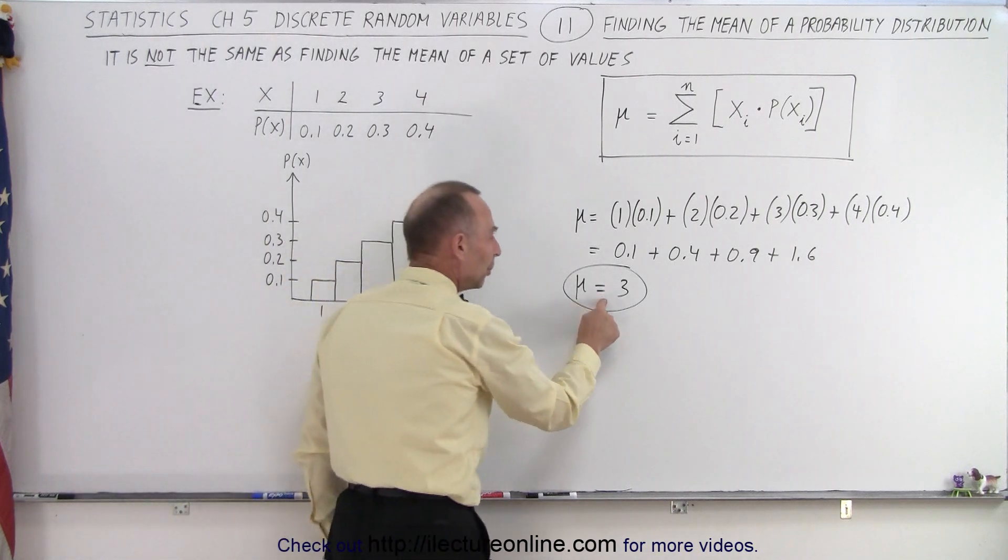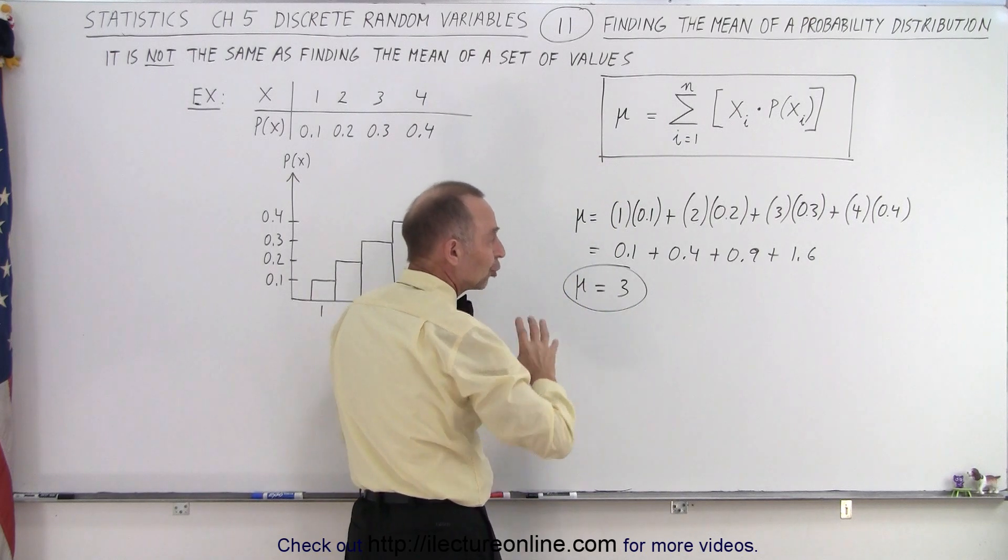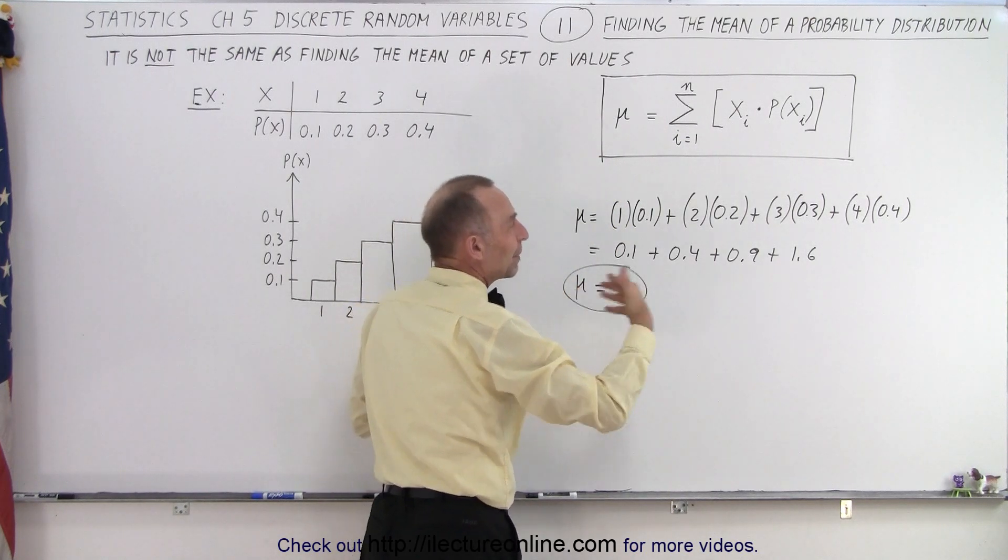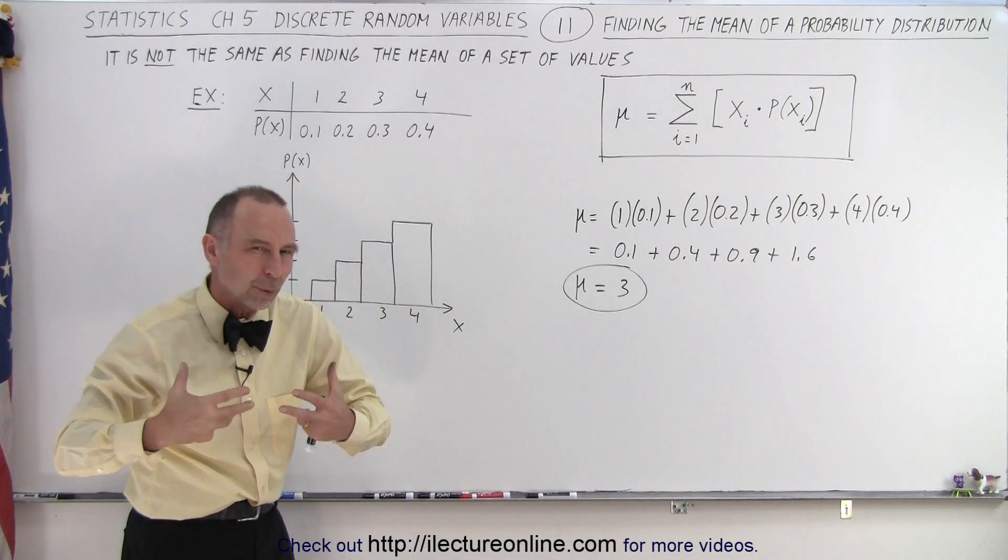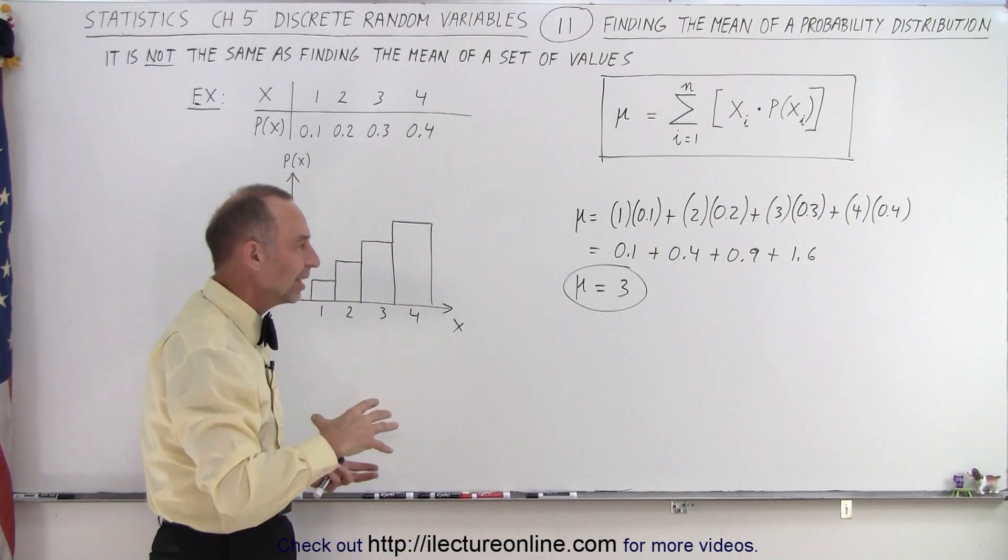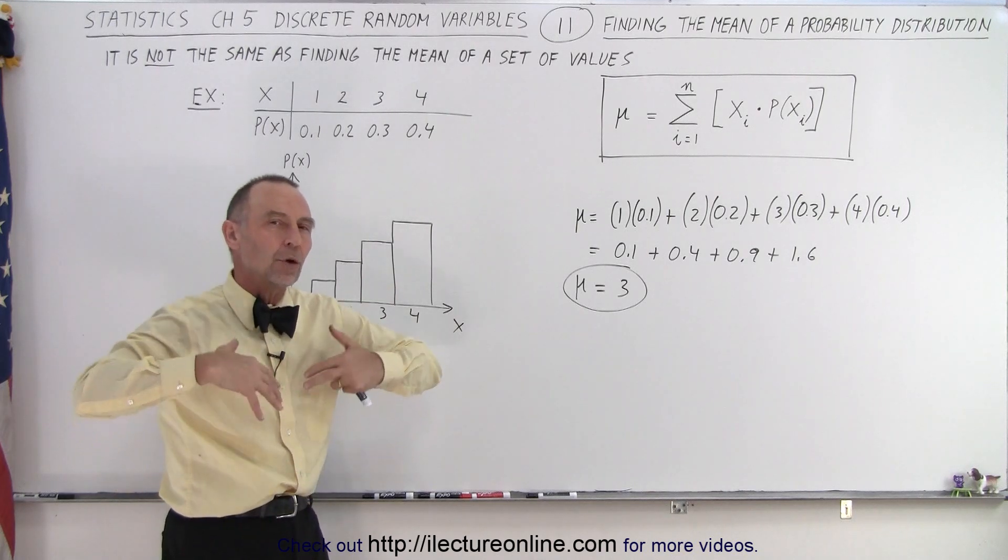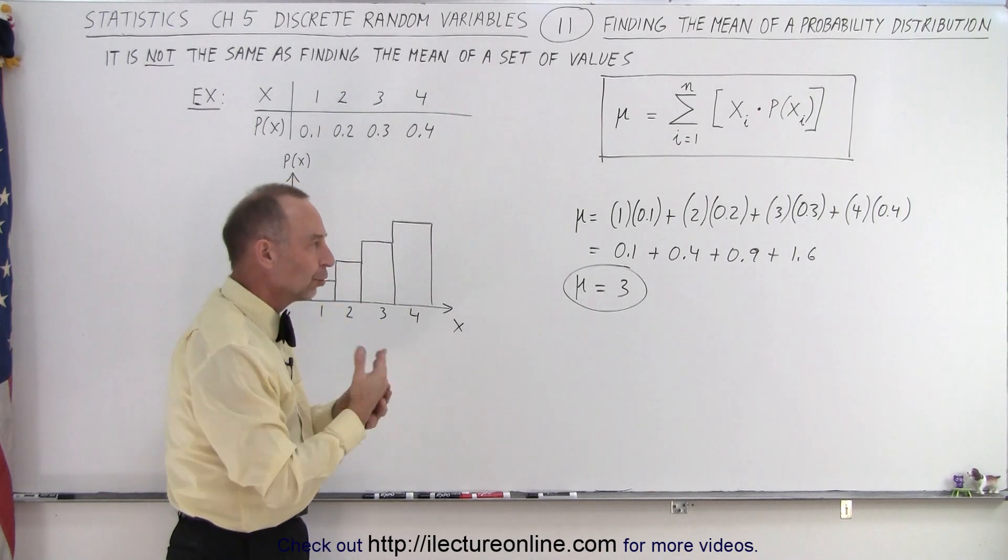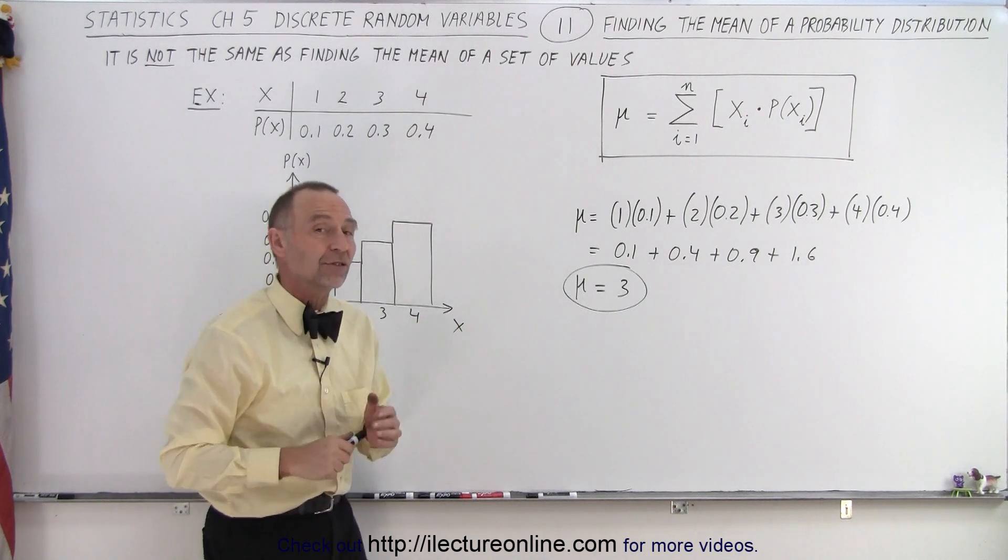So that means that the value you end up with, the mean of the probability distribution, is skewed based upon the probability for each individual value for x. Essentially it's kind of a weighting factor and so you can see that the mean not only gives you the average value for x but also it is skewed or there's a weighting factor associated with the probability of what each of those values can be.